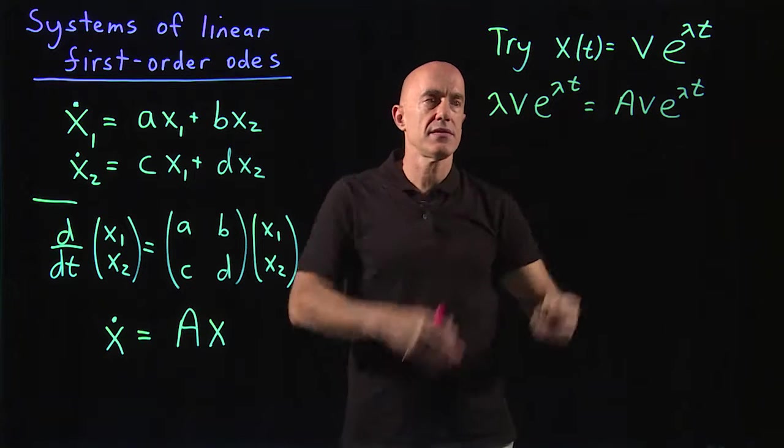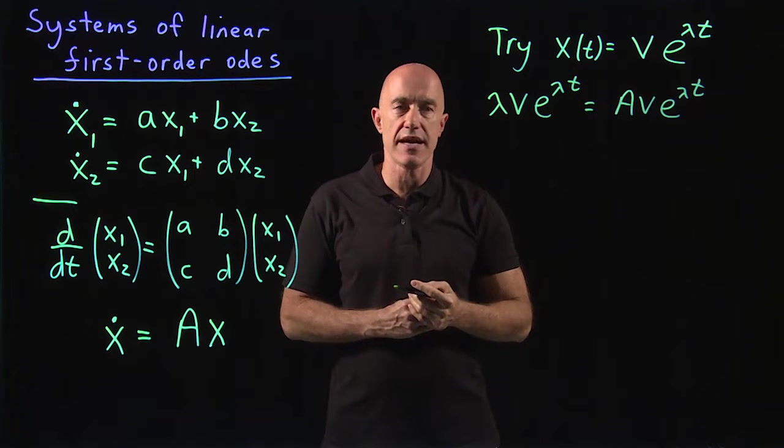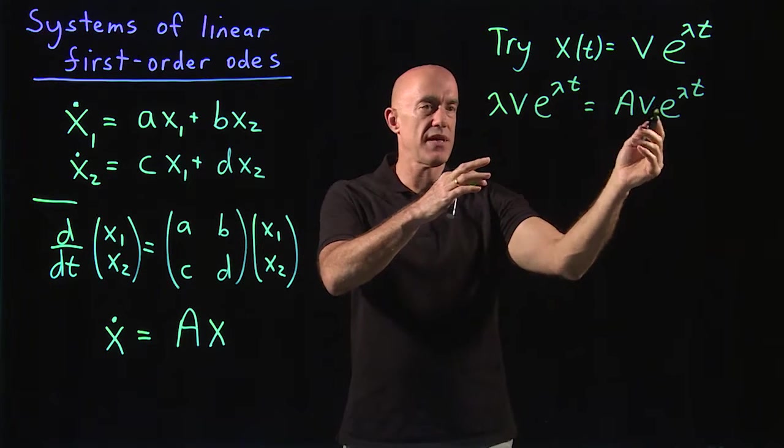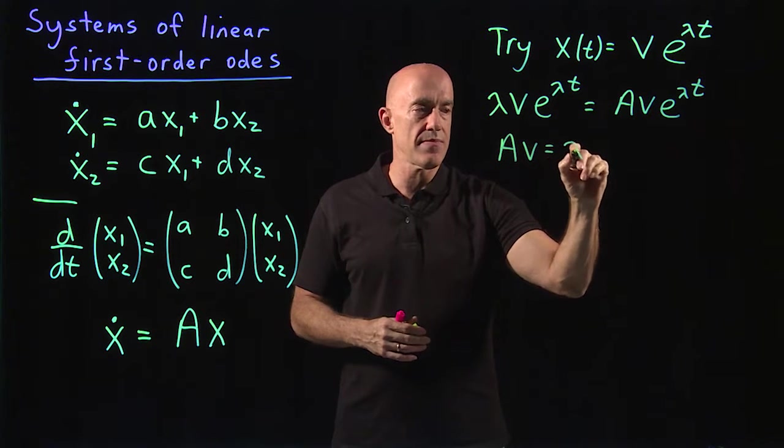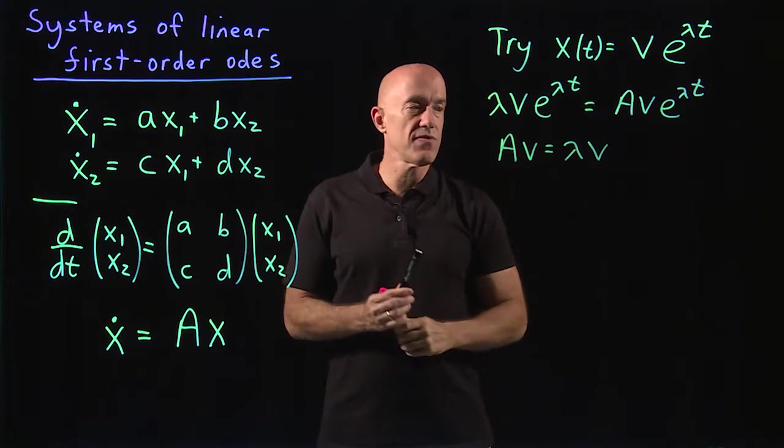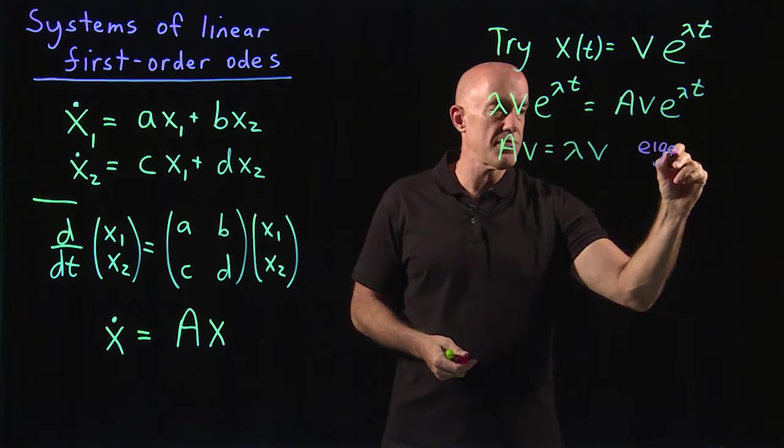As always, the exponential cancels—that's the point of the exponential ansatz. And rewrite this in a more telling fashion, put the Av on the left, we get Av equals lambda v. Those of you who remember your matrix algebra, this is the eigenvalue problem.